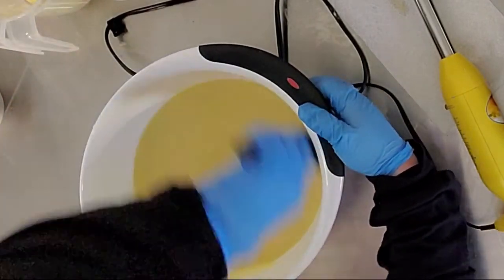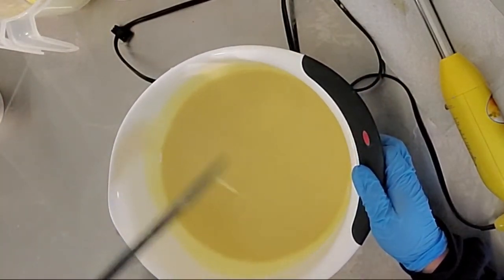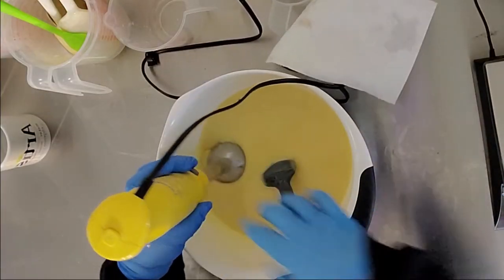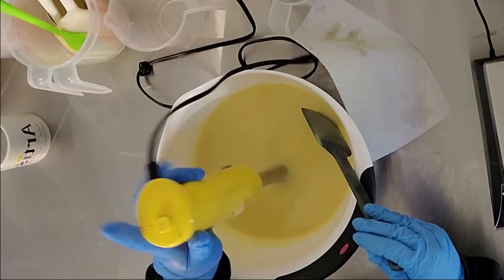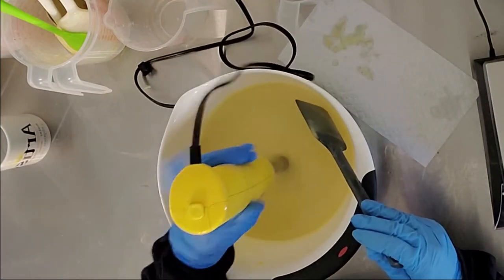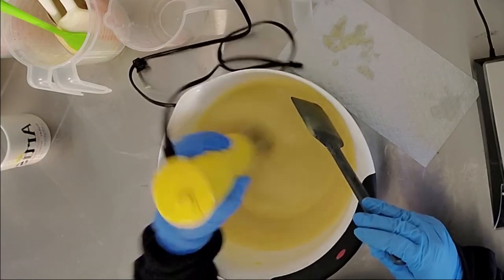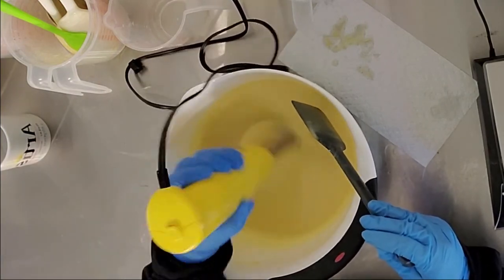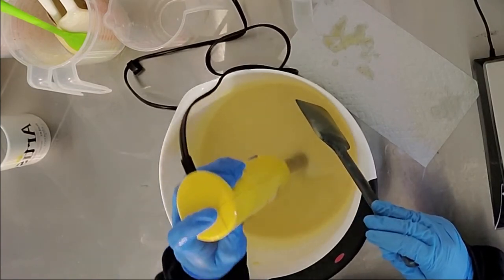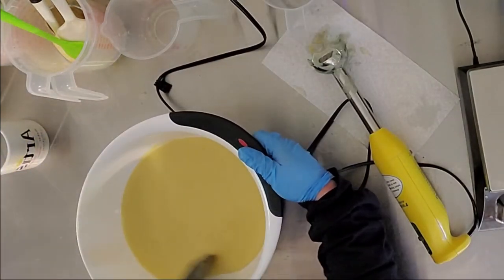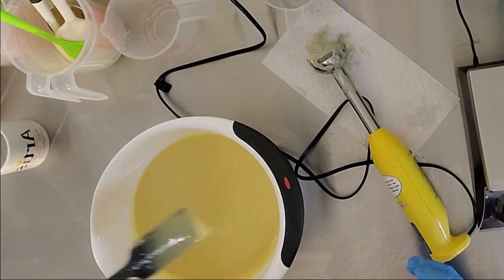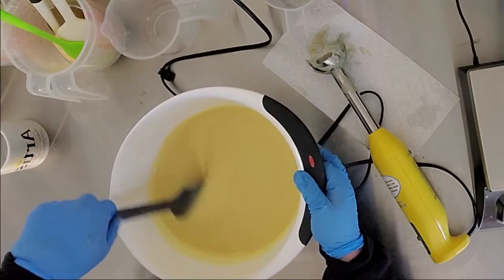The higher the temperature, the faster it will emulsify, which you'll be looking at for trace. When I lift up the spatula, I'm looking for a line that stays on the top. That is trace, also known as emulsification, mixing of the two: the oils and the lye solution. As always, you want to scrape the sides of your container to make sure all of it has been mixed properly.